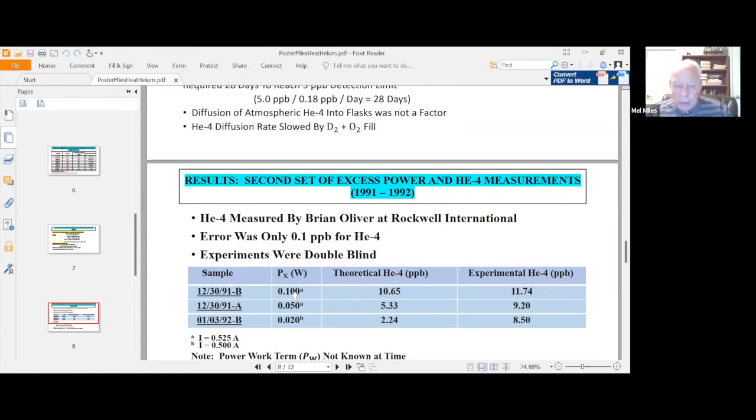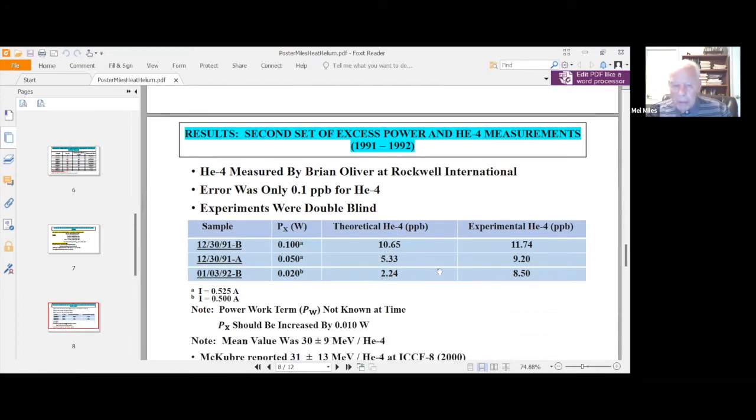But you see here, the one with the largest excess power experimentally gave the largest amount of helium-4. The one middle gave the middle amount, and the one small gave the smallest amount of helium-4. So as a double-blind experiment, they did match up. And in fact, they're not too far off what you'd expect theoretically.